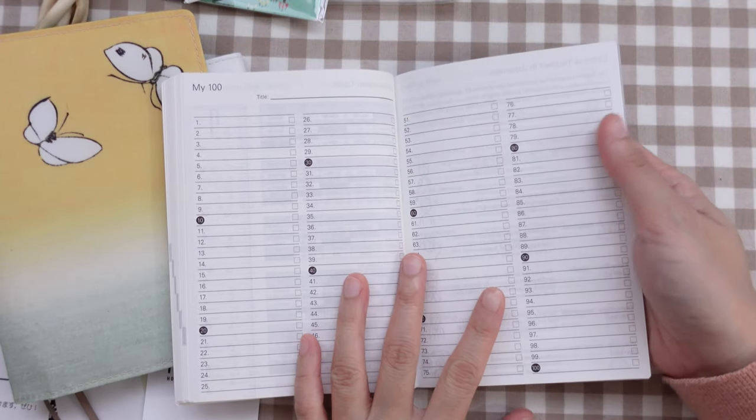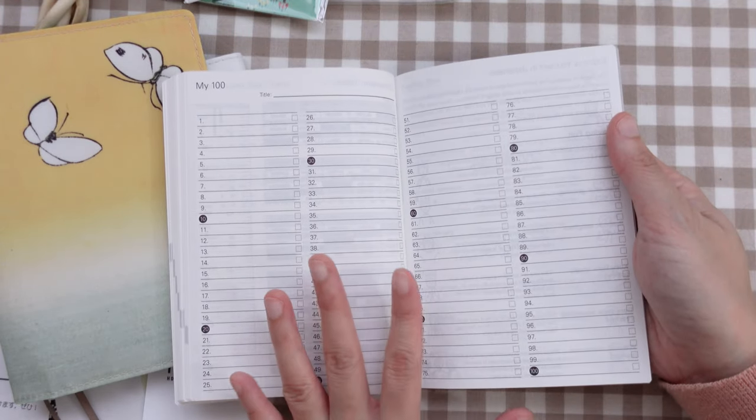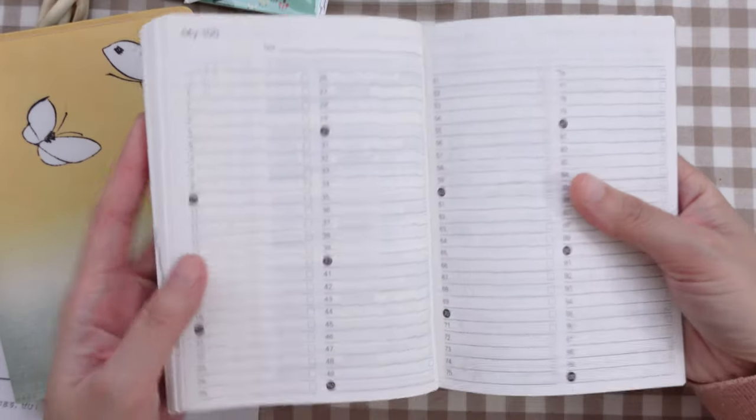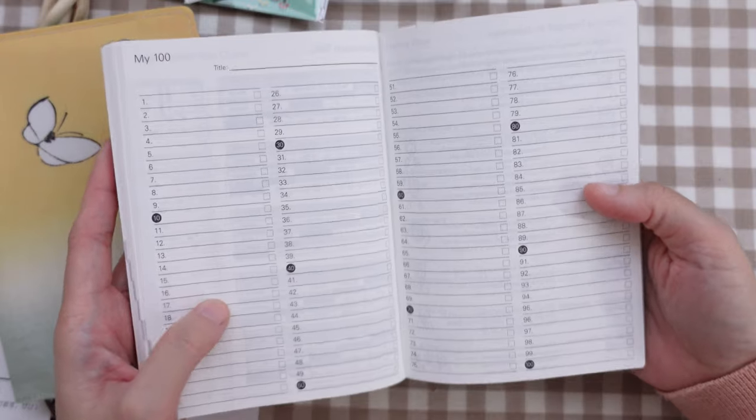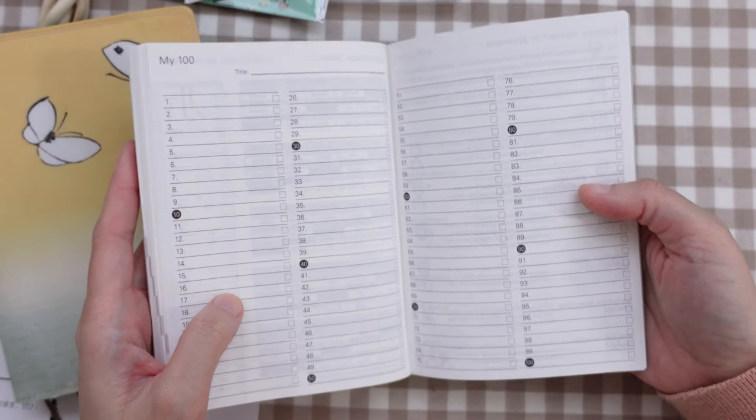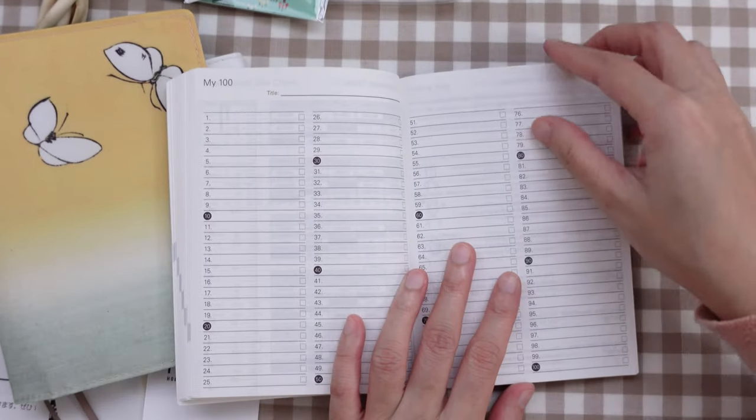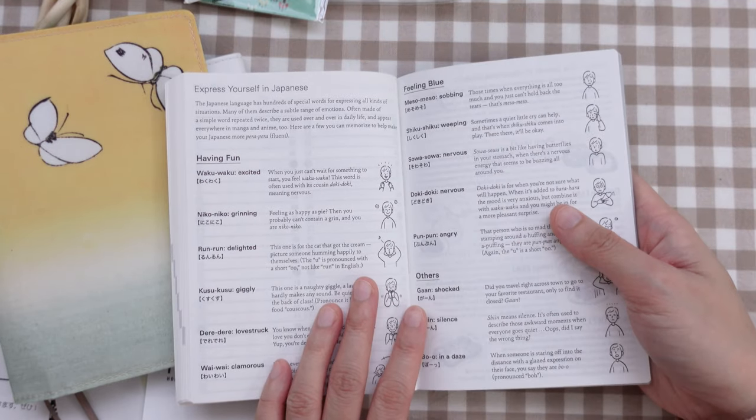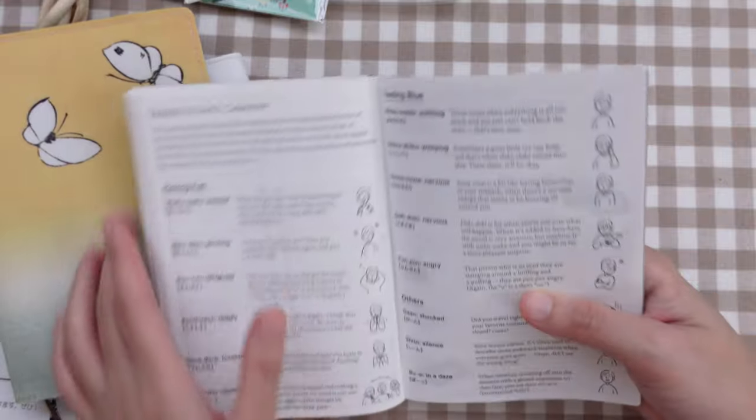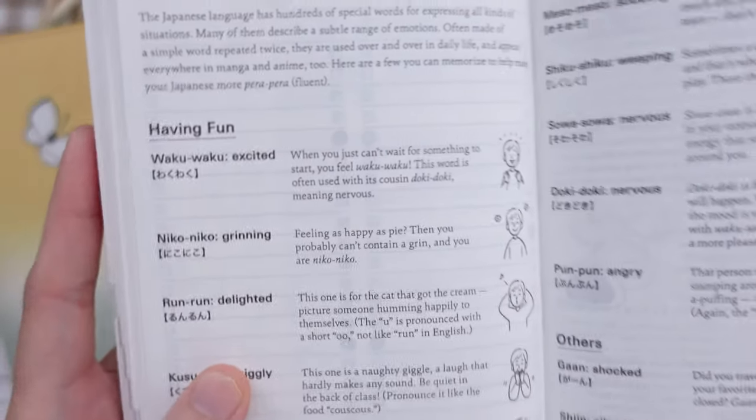I'm not sure about the habit that I want to keep next year, but I like this 100 list. So perhaps it can be 100 books or 100 movies. I'm not sure yet. So there's an express yourself in Japanese, which is nice.